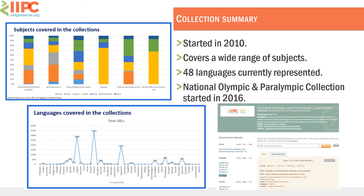Then we have the languages covered. There are 48 languages overall represented in the collection, but you can see some strong peaks around English, French, and Japanese as well. Where we have strong IIPC membership, there is more representation of those languages.